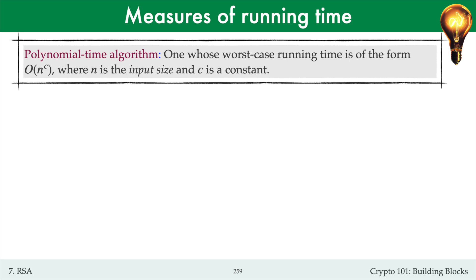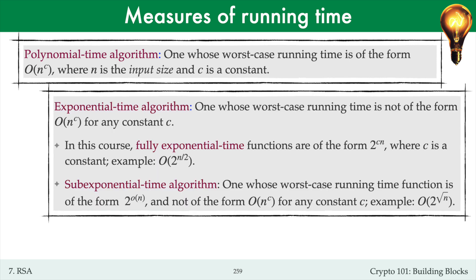Recall that a polynomial time algorithm is an algorithm whose worst-case running time function is of the form big O of n to the c, where n is the input size and c is a constant. I'll remind you that the input size is the number of bits it takes to write down the input. An exponential time algorithm is an algorithm whose worst-case running time is not bounded by a polynomial in n, where n is the input size.